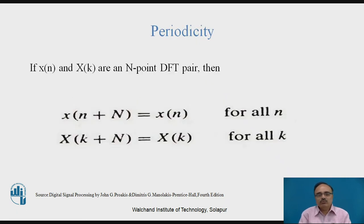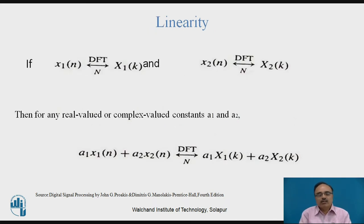Now let us start to see the property of discrete Fourier transform — periodicity. If the given sequence is x(n), a finite duration sequence, and its corresponding DFT is X(k), then if capital N is the fundamental period where x(n + N) equals x(n) for all values of n, then the periodicity property applies: X(k + N) equals X(k). This periodicity property is explained in terms of the fundamental period, which allows reconstruction of the original signal x(n) without any aliasing problem.